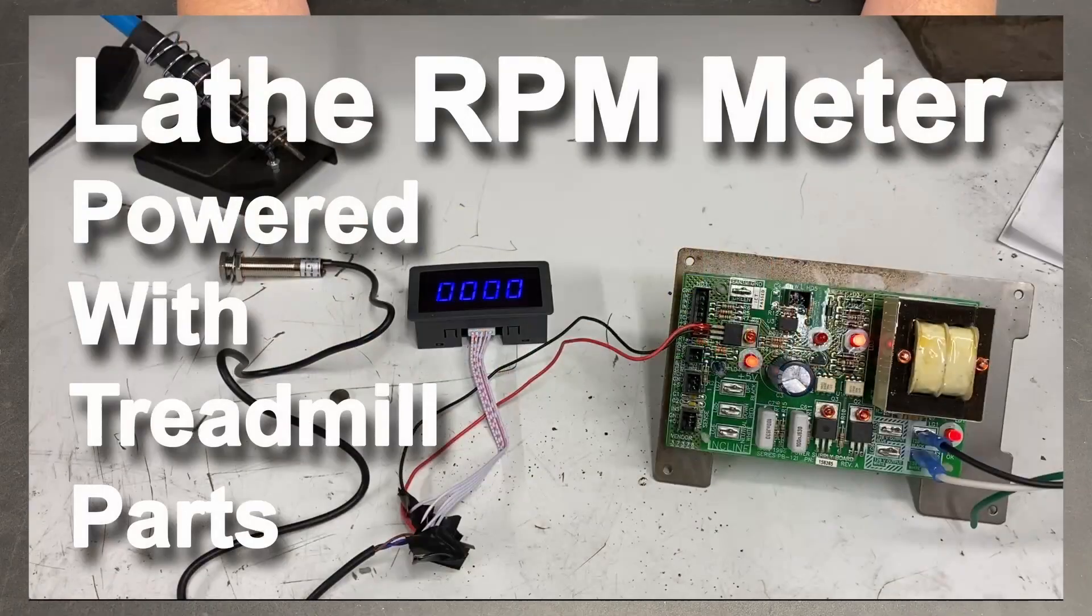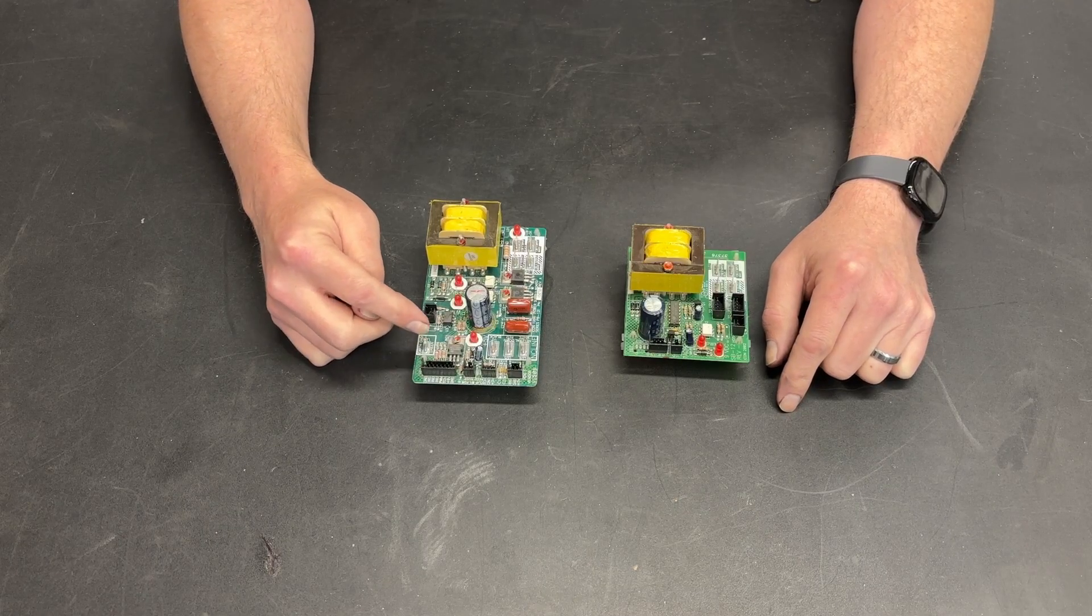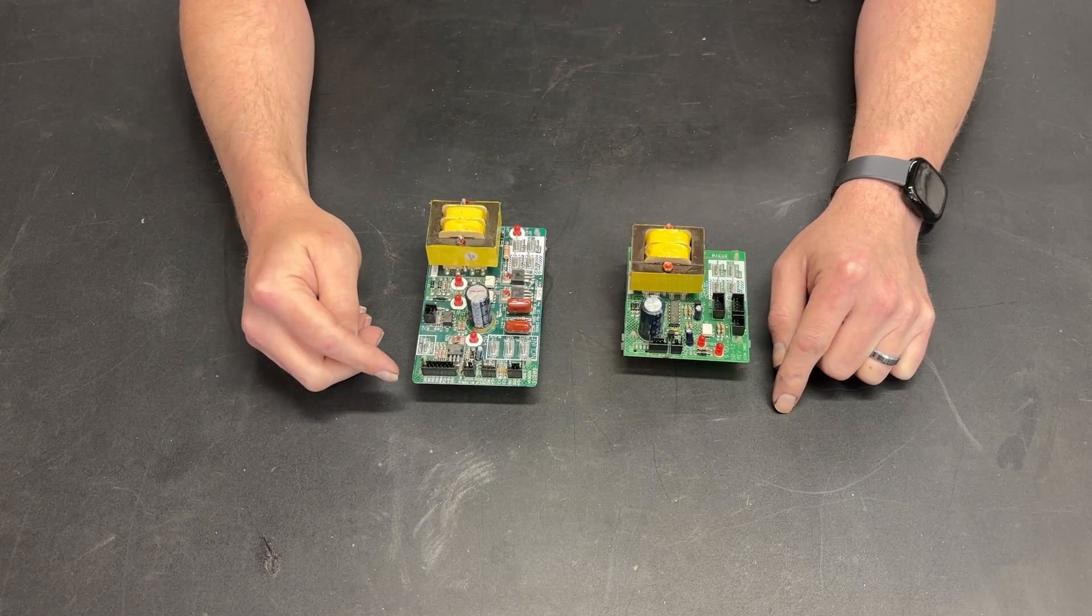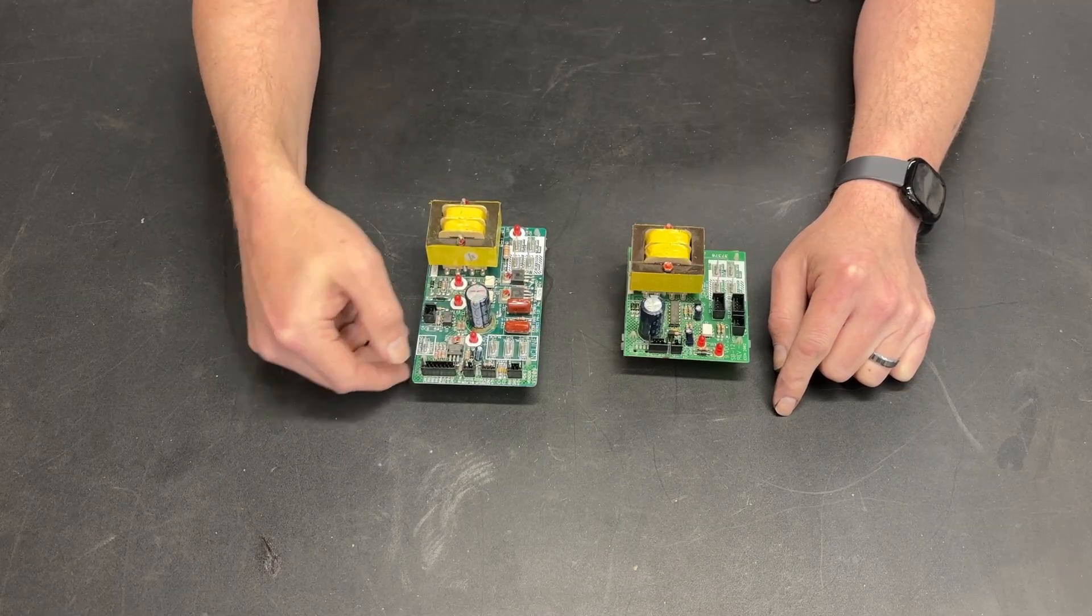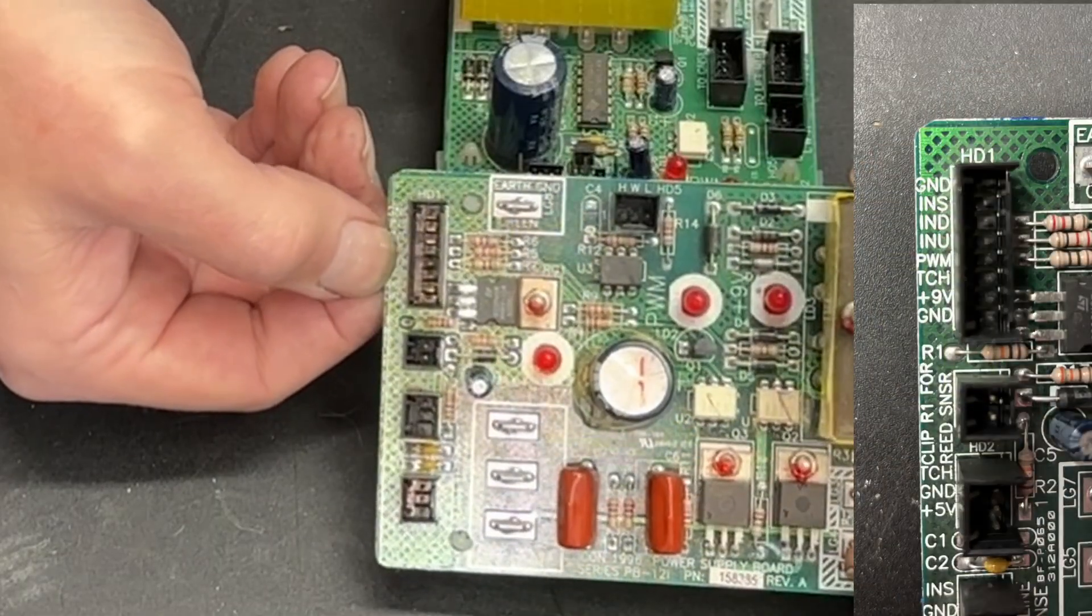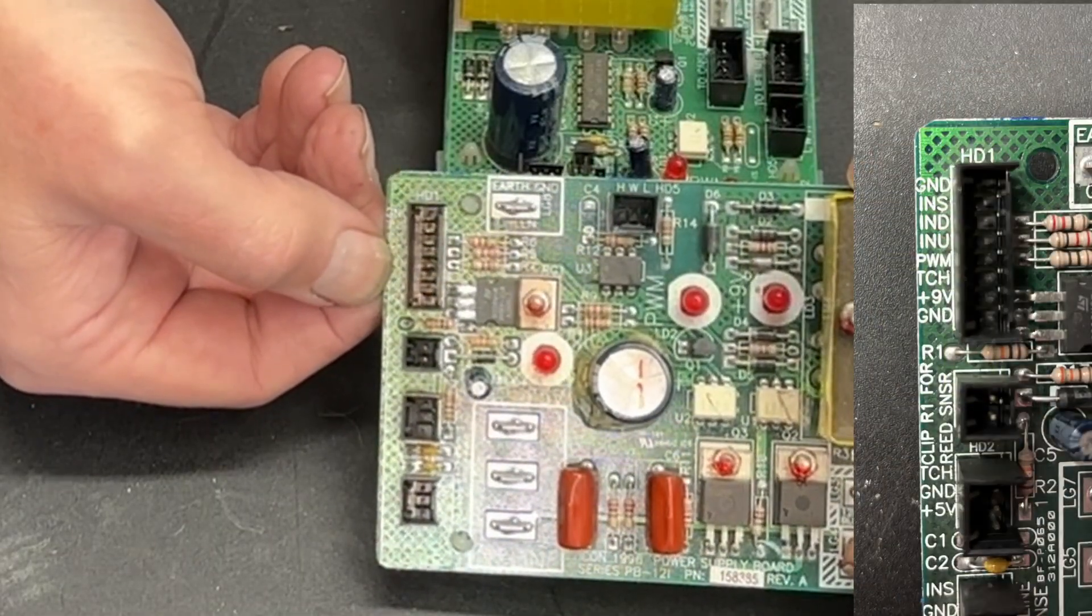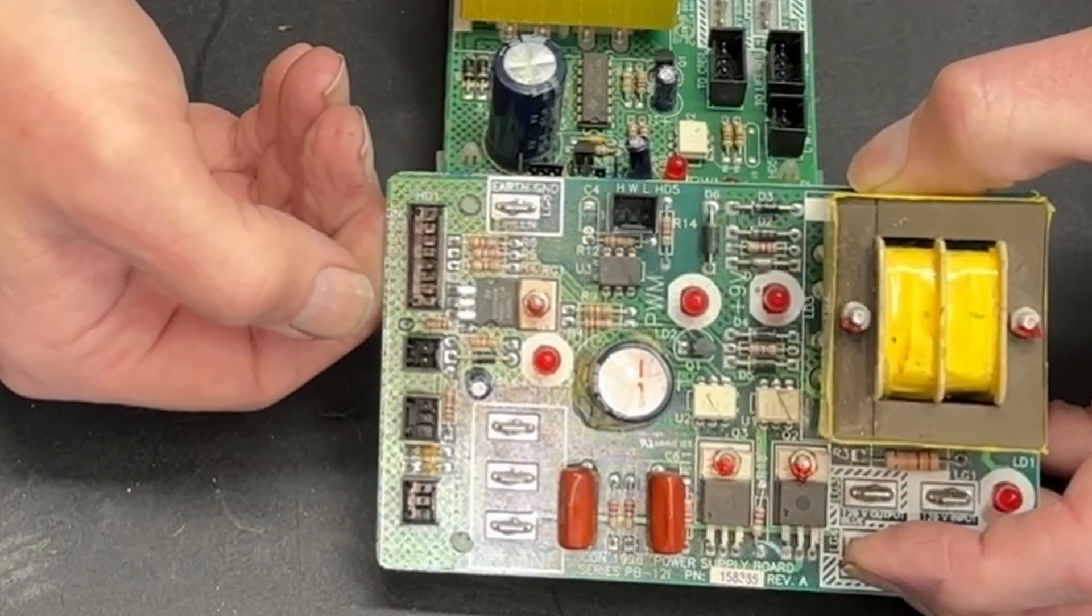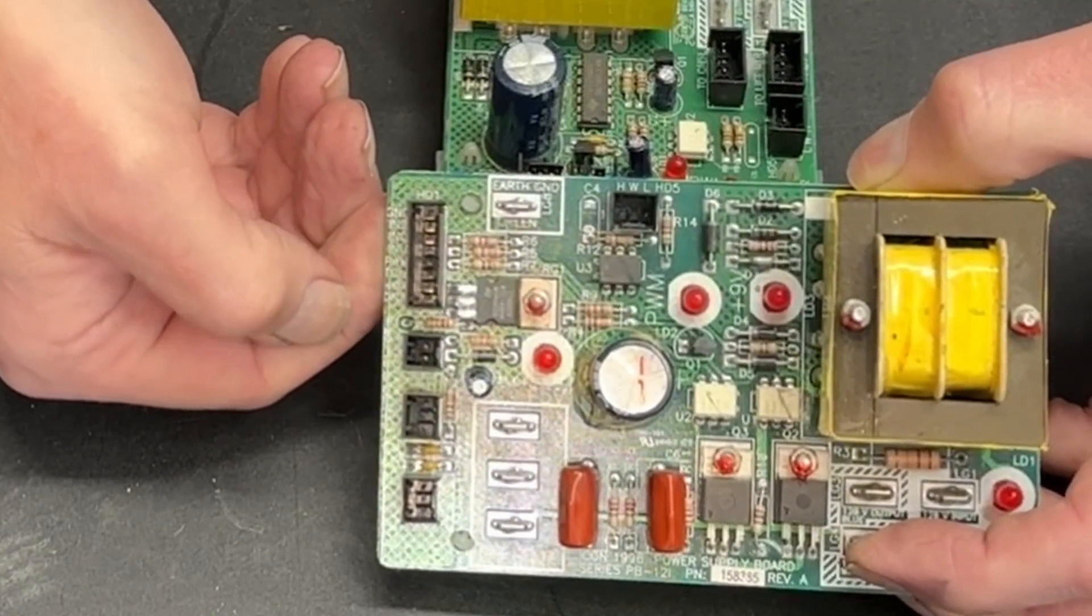Now I have a video that I did, oh it had to have been a couple years ago now, where I needed some voltage to power a digital RPM meter and it needed to be DC voltage. And I just used, well I actually used this exact board right here, because if you look on the labeling we have nine volts positive and ground. And the fact that it has positive and ground tells you that it is DC voltage. And so I was able to use this to power that digital RPM meter.